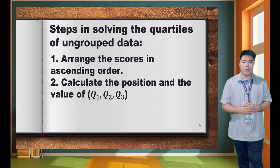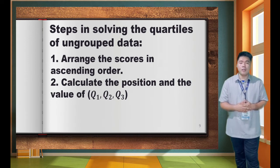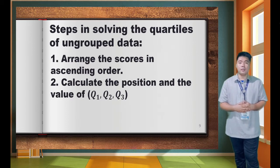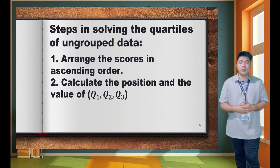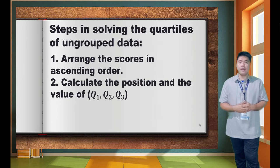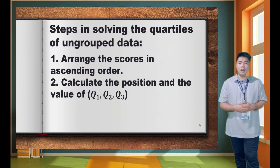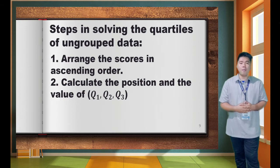In continuation with the Mendenhall and Sincich method, we have steps in solving the quartiles of ungrouped data. The first step is to arrange the data in ascending order. The second step is to calculate the position and the values of Q1, Q2, and Q3 — the lower quartile, the middle quartile, and the upper quartile.